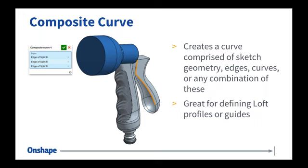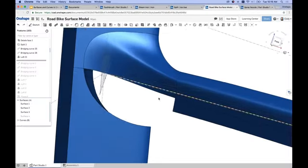The way to think of composite curve is it brings together multiple selections — it's composed of multiple selections. You select a series of things: could be edges, curves, or sketch geometry, and it takes all of those things and makes it one curve. If you've ever been in a situation where you wish you could select just one thing but it's actually a combination of multiple things, make a composite curve. That composite curve gives you one selectable entity. It's great for defining loft profiles or guides for a loft.